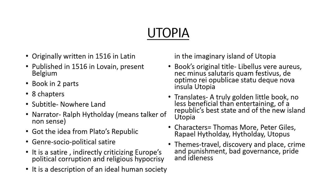Utopia was originally written in 1516 in Latin and published in 1516 in Louvain, present-day Belgium. The book is in two parts with eight chapters. The subtitle is Novella and the narrator is Ralph Hythlodaeus, meaning 'talker of nonsense.' Thomas More got the idea from Plato's Republic. The genre is social and political satire, indirectly criticizing Europe's political corruption and religious hypocrisy. It is a description of an ideal human society on the imaginary island of Utopia. Characters include Thomas More, Peter Giles, Ralph Hythlodaeus, and Utopus. Themes include travel, discovery, crime and punishment, bad governance, and idleness.